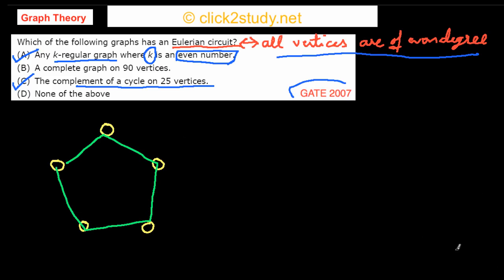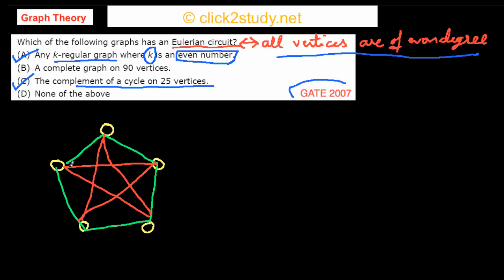To find the complement, I start by making the complete graph K5 on these five vertices. The additional edges needed to complete it are drawn in red, while the original cycle is in green. To get the complement of the cycle, I remove the edges that were in the cycle, and whatever is left — the red edges — is the complement.